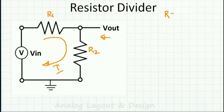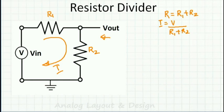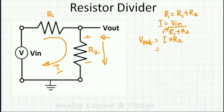Since the same current is flowing, these two resistors are in series. So R_total equals R1 plus R2. If I know the voltage and the resistance, I can find the current: I equals Vin divided by R1 plus R2. Now, to compute Vout, I measure I into R2 with respect to ground. So Vout equals I into R2, which is Vin divided by (R1 plus R2) into R2.